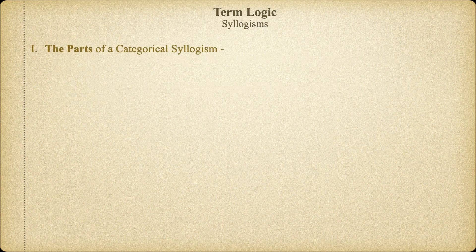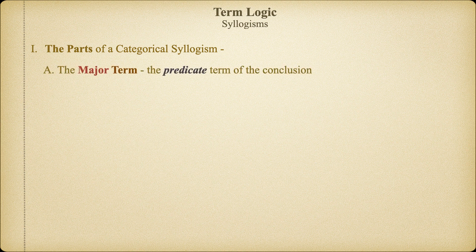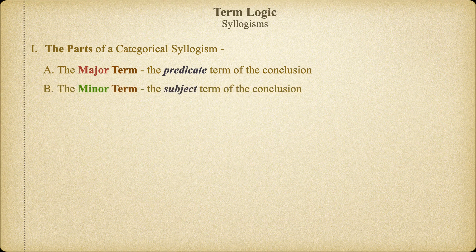Now, it may seem counterintuitive, but we're going to begin our analysis with the conclusion of the argument instead of with the premises. The subject and predicate of the conclusion of a categorical syllogism gives us our first two new vocabulary terms. We define the major term as the predicate term of the conclusion. The subject of the conclusion is going to give us what we call the minor term. This may seem a little odd—why isn't the subject of the conclusion the major term? We're going to come back to that in just a minute.